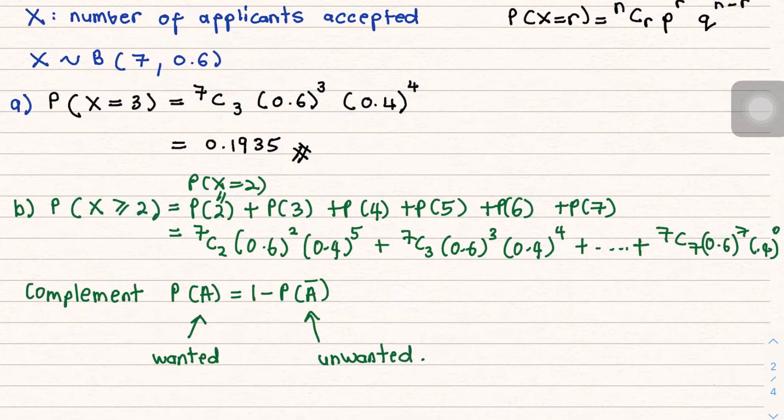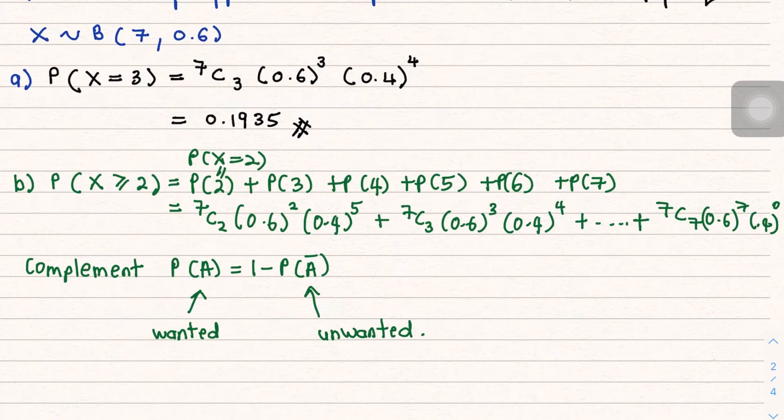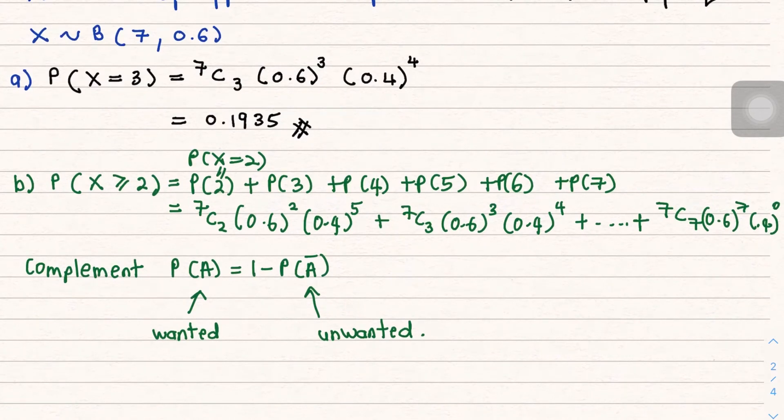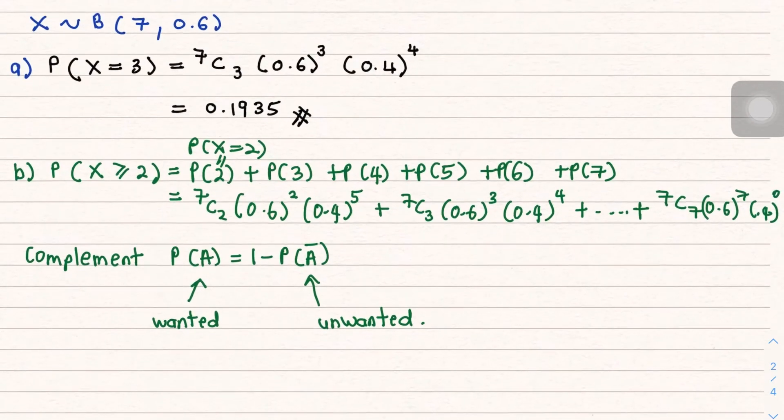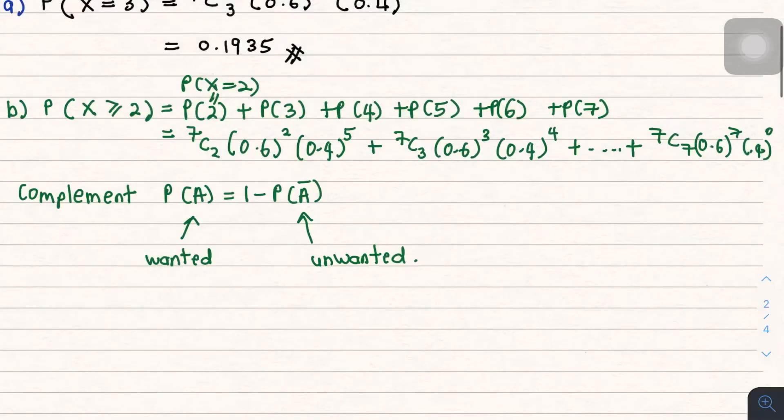So over here, your wanted case is at least two applicants, so the unwanted case, at least two applicants means two, three, four, five, six, seven. So the unwanted case should be zero and one, correct? Because you got seven applicants.